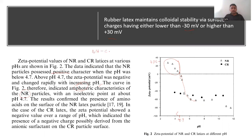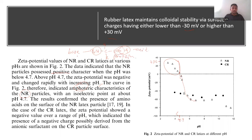Natural rubber shows amphoteric behavior because the protein layer on the rubber particle contains both amine groups (basic, −NH2) and carboxylic groups (acidic, −COOH) in the same molecule. This gives the protein an amphoteric nature, allowing the rubber particle to show both positive and negative surface character depending on pH. The results confirm the presence of amino acid surface character on the rubber particle. Chloroprene rubber latex, by contrast, shows only negative zeta potential over the entire pH range — no positive or amphoteric character.